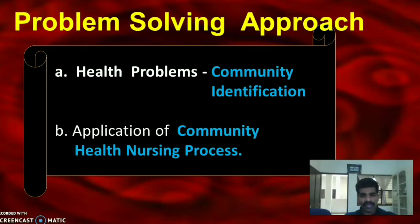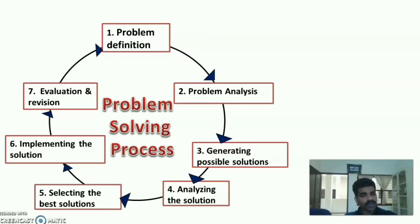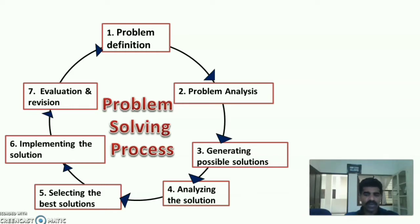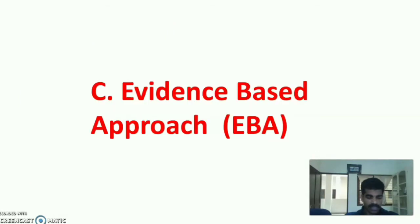We first assess the health problems of the community through community identification by conducting mass screening. The problem solving process includes: problem definition, problem analysis, generating possible solutions, analyzing solutions, selecting the best solutions, implementing the solutions, and evaluation and revision. It is a cycle that continues to solve all the problems of the community.